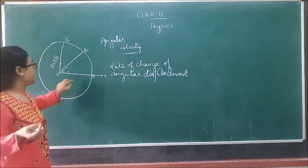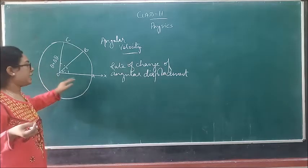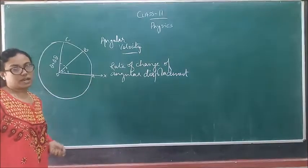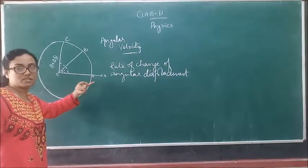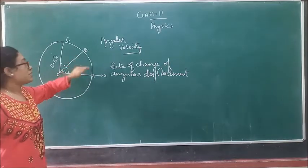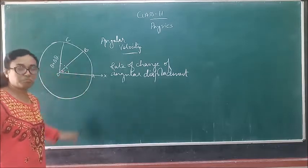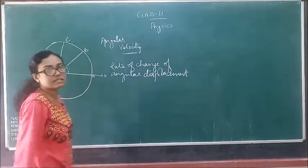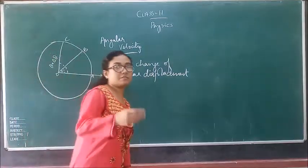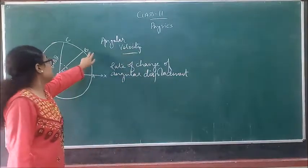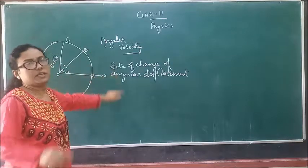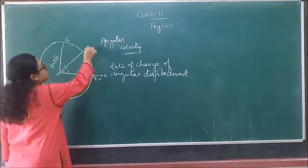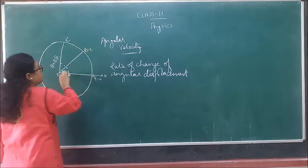An object is kept at point A on the x-axis at time 0. Now the object starts displacing from point A to B with an angle theta. That angle is theta, and it is displaced with time T.